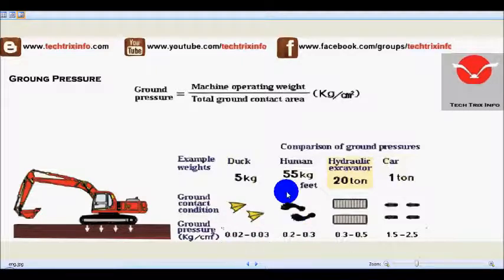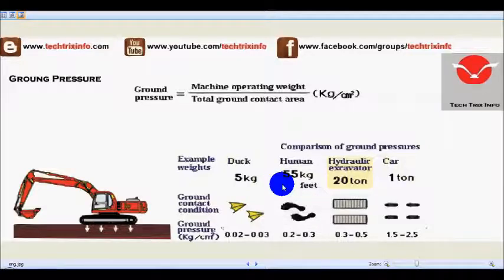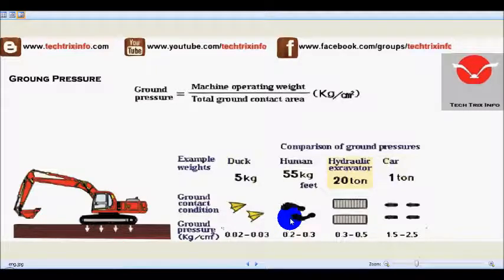If we take a human with a weight of 55 kg and calculate the average total ground contact area, the ground pressure will be 0.2 to 0.3 kg per centimeter square.